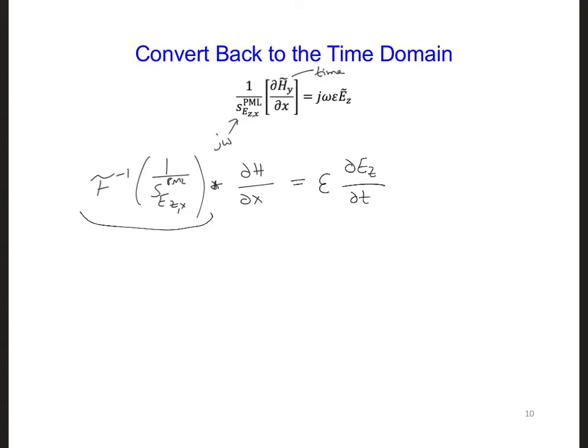Ultimately, for this first term of the convolution, we're going to get delta or a Dirac delta function minus sigma ez x PML over epsilon naught, and that times e to the minus sigma ez x PML over epsilon naught times t, and all that times the unit step function.